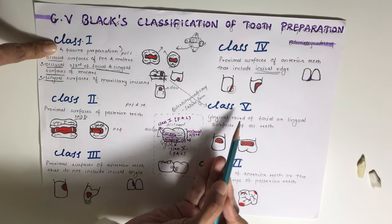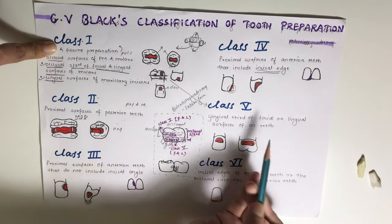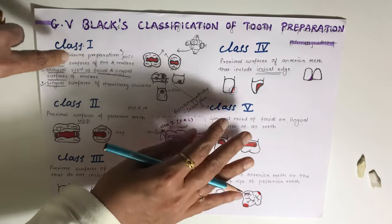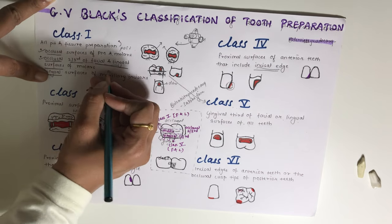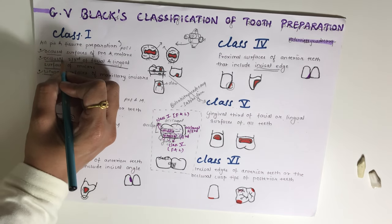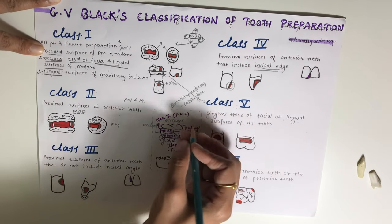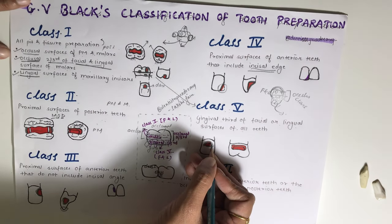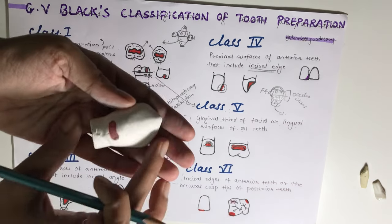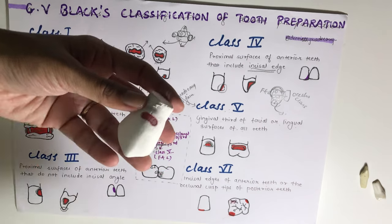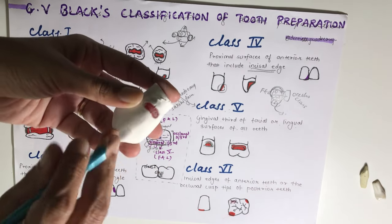Class 5 is the preparation done on the gingival third of the facial or lingual surfaces of all teeth. Remember the distinction: in Class 1 the preparation is on the occlusal two-thirds, whereas in Class 5 it is the gingival third. For example, on a premolar, a preparation in the gingival third of the facial surface is Class 5.